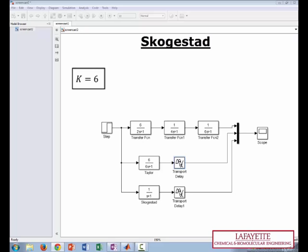Now for Skogestad approximation, tau equals the largest time constant plus half of the second largest time constant. So this would be 6 plus 1 half of 4, which is 2. So our tau is 8, because 6 plus 2 is 8.